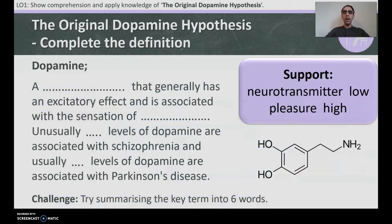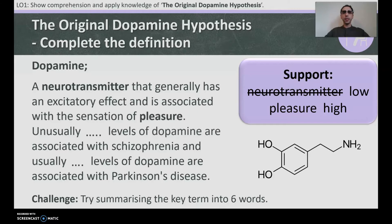What is dopamine? Dopamine is a neurotransmitter that generally has an excitatory effect and is associated with the sensation of pleasure. High levels of dopamine are associated with schizophrenia, while low levels of dopamine are associated with Parkinson's disease.